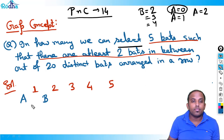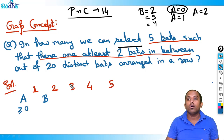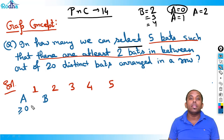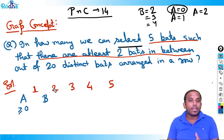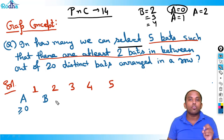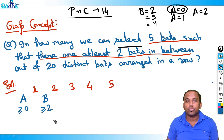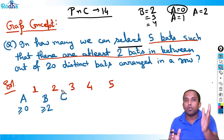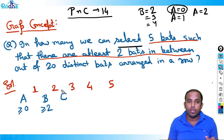The constraint is: A should be greater than or equal to 0, because if I pick the first bat, number of bats before it is 0, and A can take all values greater than or equal to 0. Now B — the number of bats between first and second bat — has to be at least 2, so B is greater than or equal to 2.